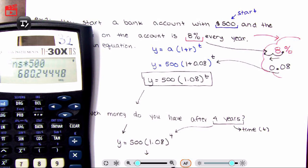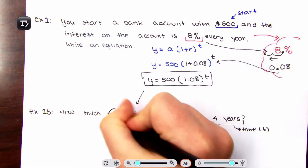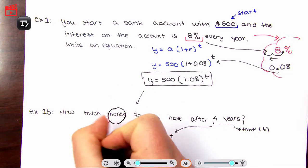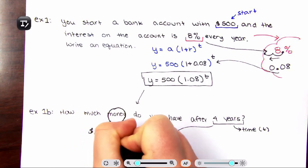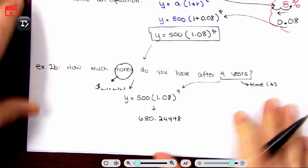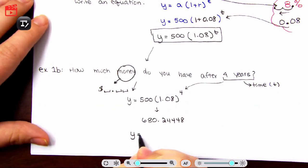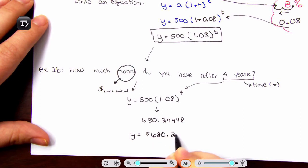For example, this one is saying how much money. Money has two decimal places, right? So when we are rounding our answer, you have to make sure you round it to what makes sense. So the quantity of money is $680.24 after four years.